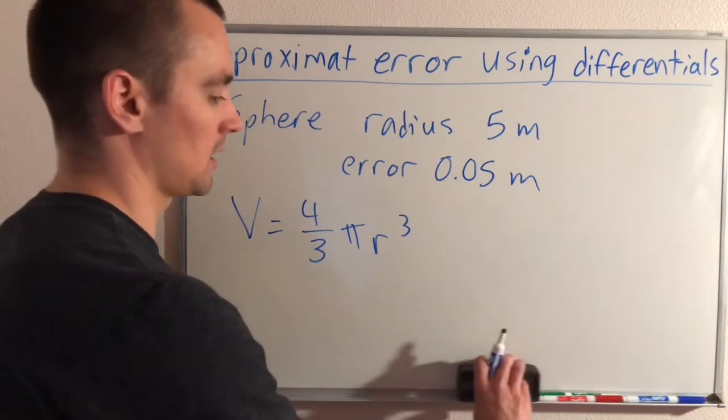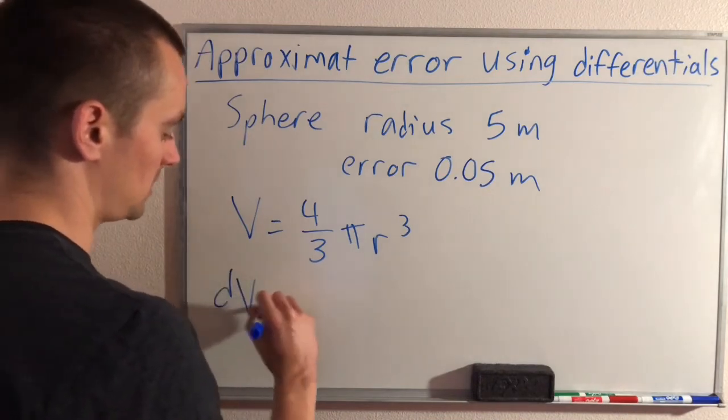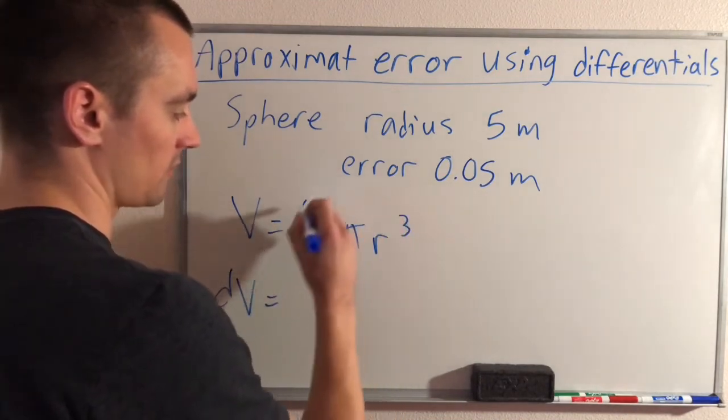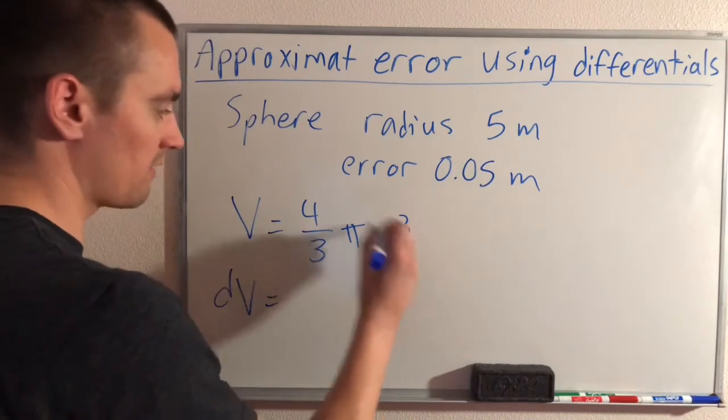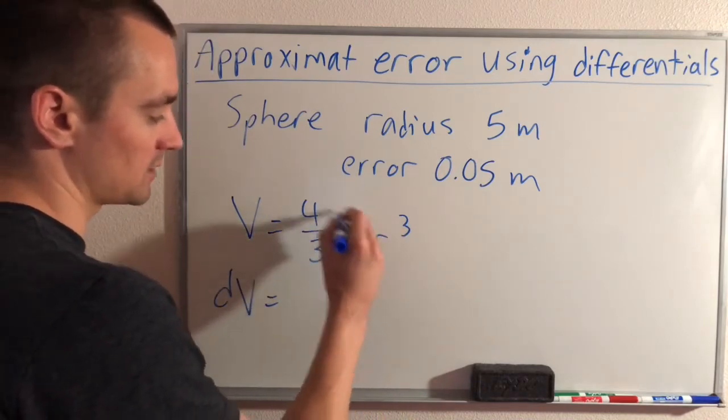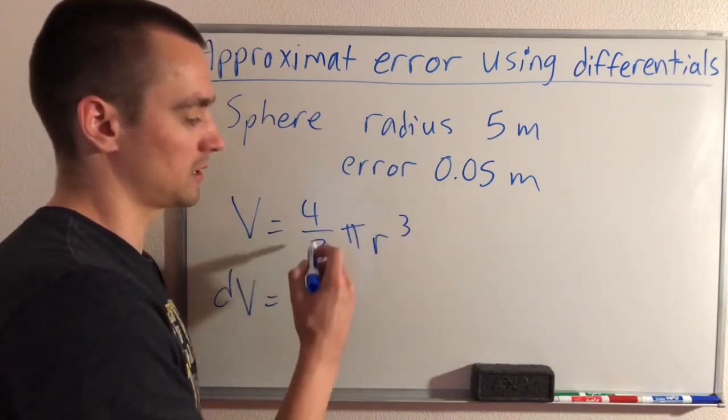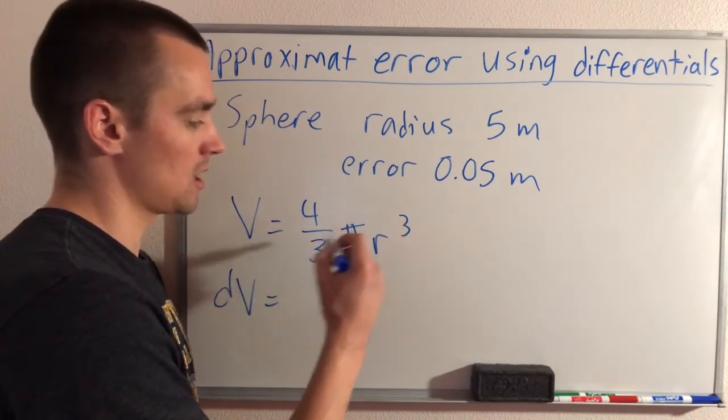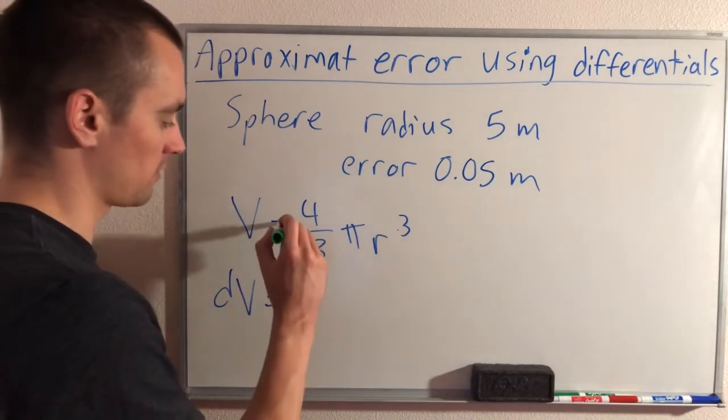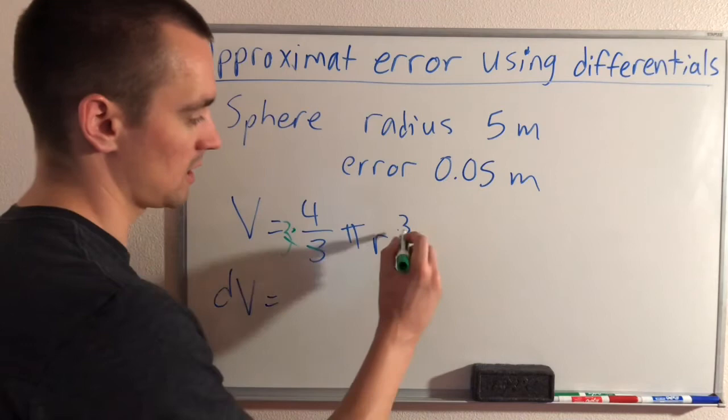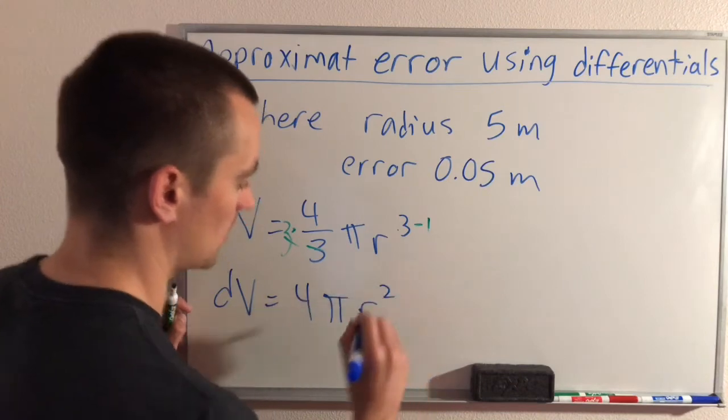Just like I talked about in yesterday's video, to find the differential we basically just need to do dV, which would be the derivative of this function times dr, which would be the possible error in our radius. The derivative of this function—four-thirds times pi is just a constant being multiplied by r cubed. Since r is our variable, we can do power rule: bring the three down in front and lower the power by one. Multiplying by three, these threes will cancel, so we'll be left with four pi r squared.